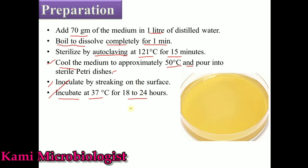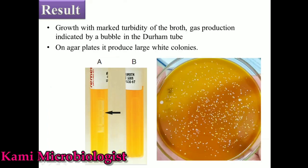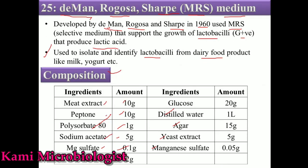After overnight incubation, we check the colony of the bacteria and check the gas bubbles produced. If we grow the bacteria using broth, these bacteria produce gas, and we also get white turbidity as well as bubble formation in the test tube using MRS broth. If we are using plates, it mostly produces large white colonies. So these are all the details about the lactobacilli media, or de Man, Rogosa, and Sharp medium, also known as MRS medium. Thank you so much for watching.